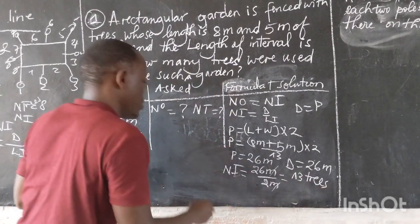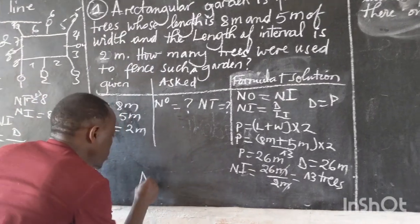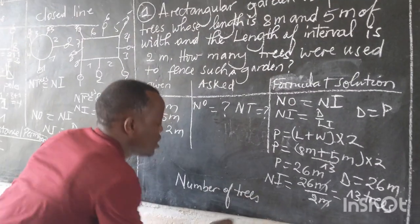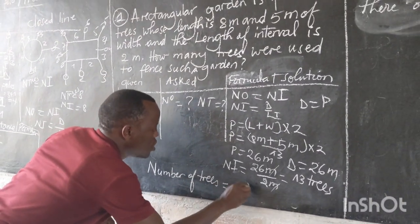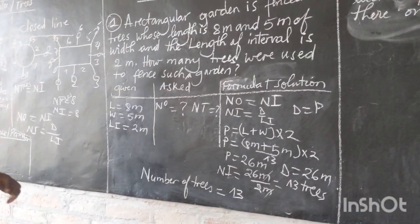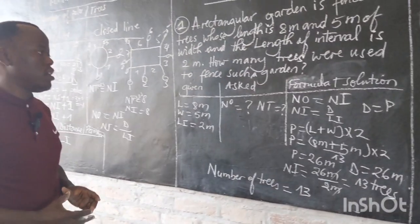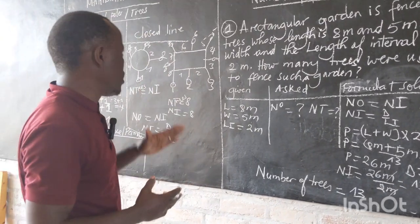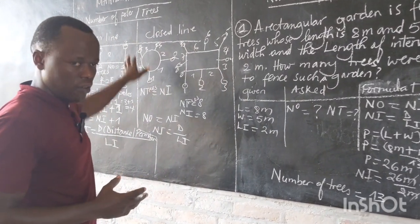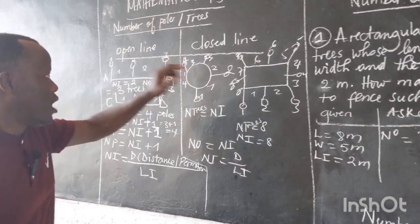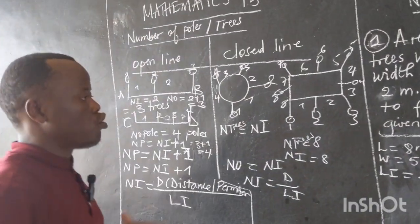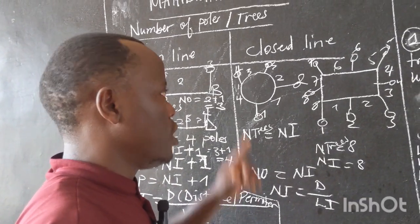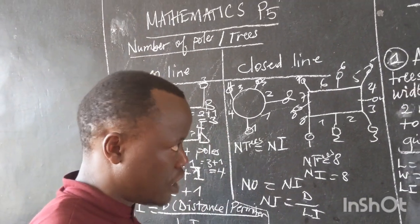So the number of trees used to fence such a garden is equal to 13. I think this question is very easy and clear to understand, referring to what we covered previously where we talked about open line and a closed line. Now we are going to talk about the second example.